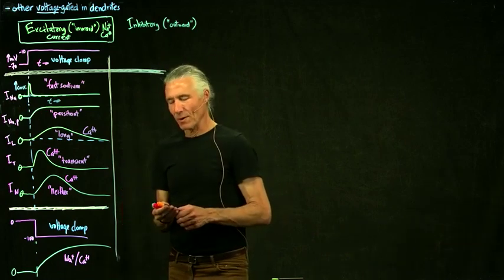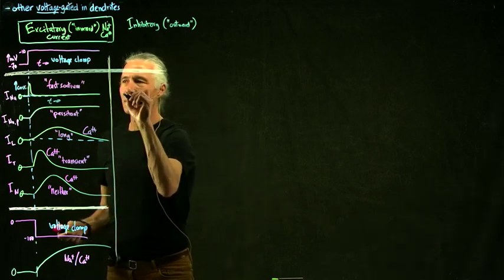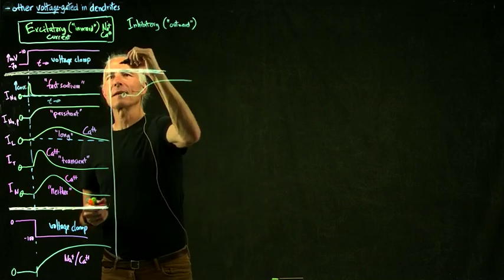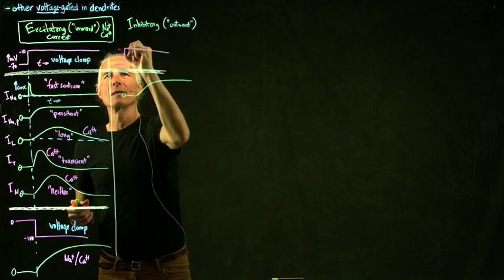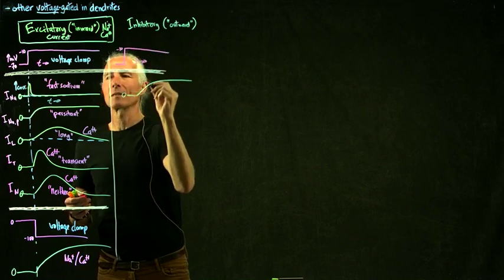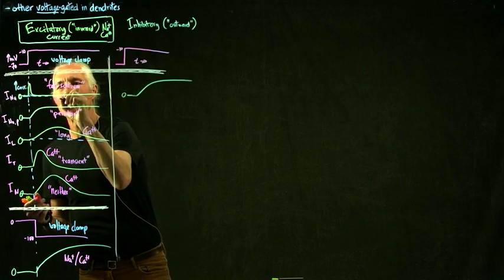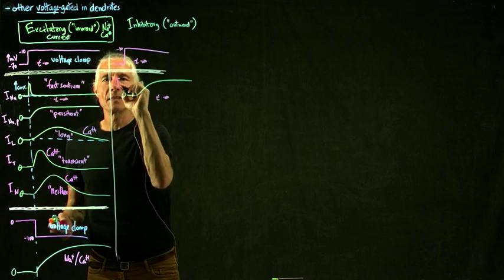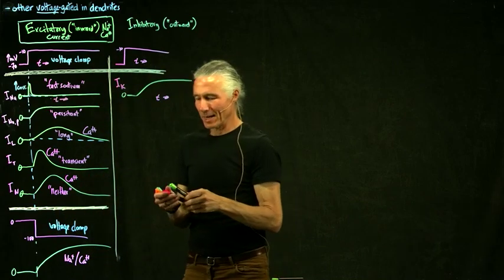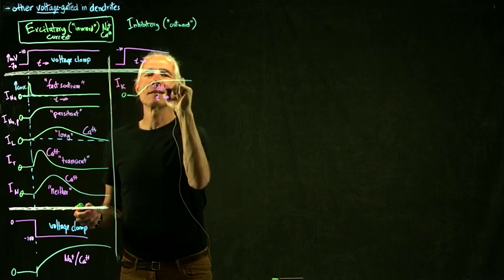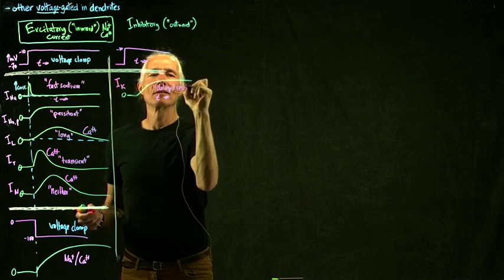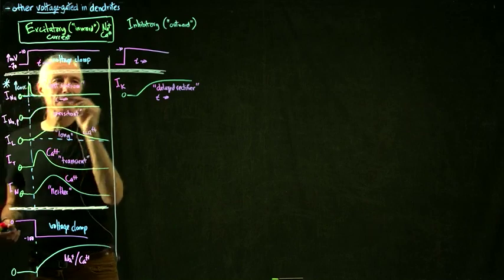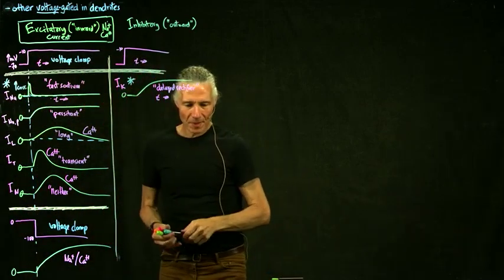The first one we talked about last time was the delayed rectifier, IK. Starting at zero, this channel is non-inactivating. When you depolarize with the voltage clamp, it just turns on and stays on. 'Rectifier' means the thing that puts things back right — it's the delayed rectifier.